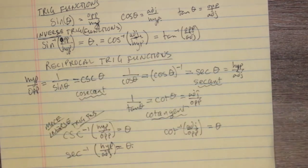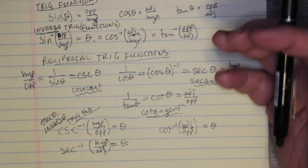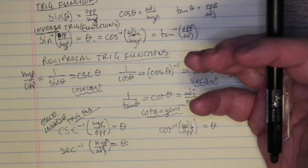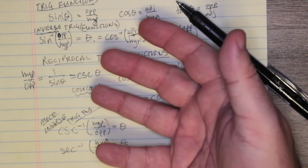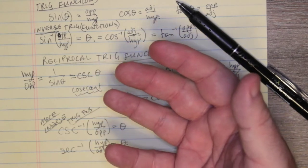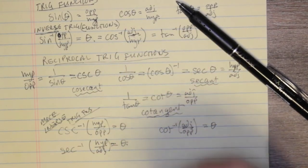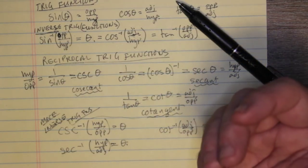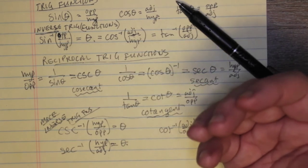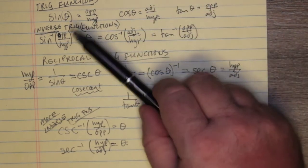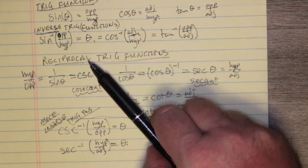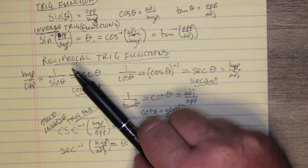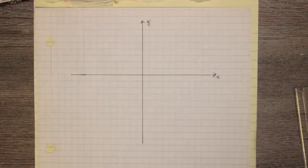You have to remember a clear distinction: a reciprocal trig function is where you flip over a fraction, doing one divided by the function. An inverse trig function is where the domain and range switch. If the domain and range switch, you're talking about an inverse trig function. If you're flipping something over as a fraction, you're talking about a reciprocal trig function.